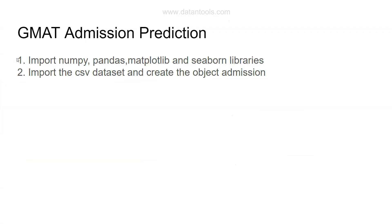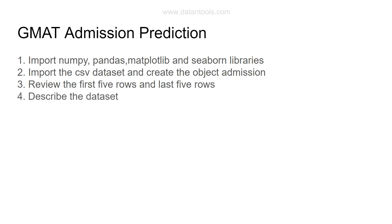Once you have imported the dataset and created the 'admission' object, review the first five and last five rows using the appropriate functions. Then describe the dataset — all numerical variables have properties like mean, median, mode, max, min, and quartiles at 25%, 50%, and 75%. This helps you understand whether there is any null data or a high difference between the median and mean, and what the range of the data looks like.